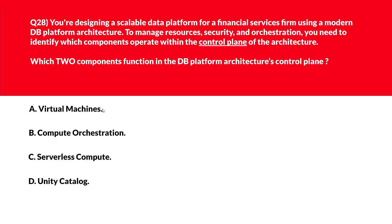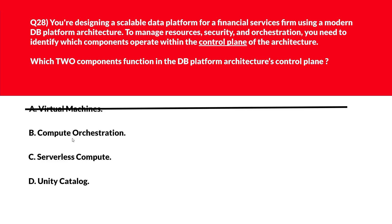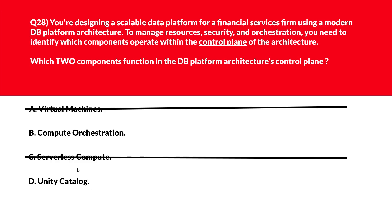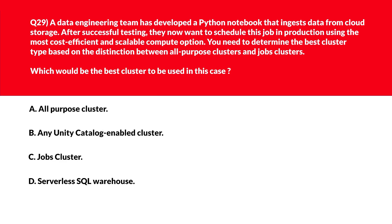All righty, we have a multiple choice question — we need to select two correct answers. The question will test your concepts on the control plane of architecture. Option A says virtual machine. Virtual machines operate in the data plane and do not manage orchestration or governance — wrong answer. Option B says compute orchestration. Compute orchestration handles job scheduling and workflow coordination, which are control plane functions — let's keep it. Option C says serverless compute. Serverless compute executes workloads but doesn't participate in control logic or metadata management — wrong choice. Option D says Unity Catalog. Unity Catalog manages metadata, permissions, and governance centrally within the control plane — another correct answer. Options B and D are the right answers.